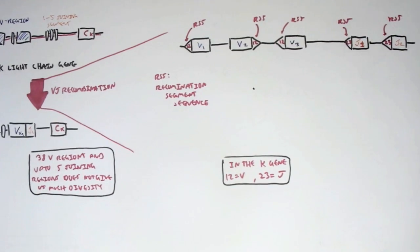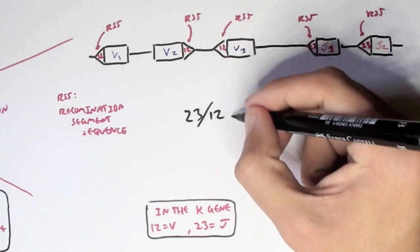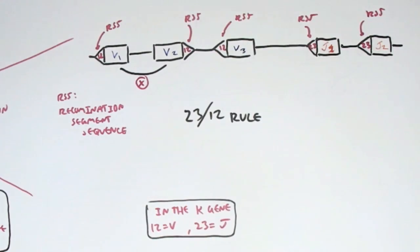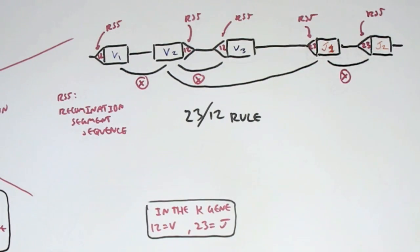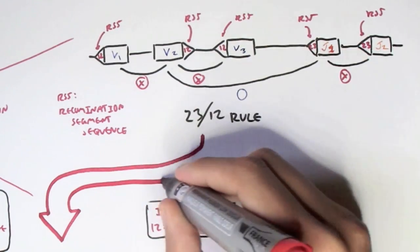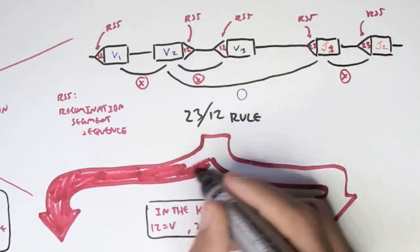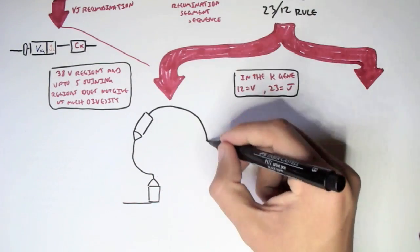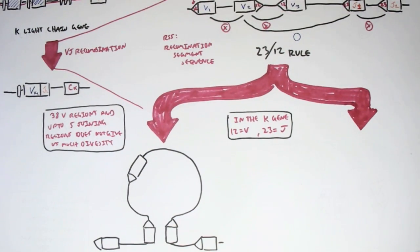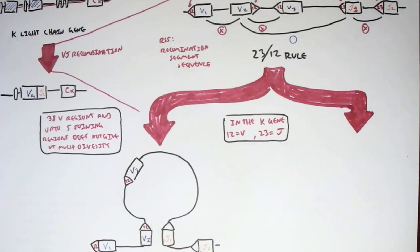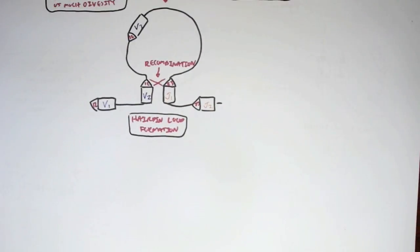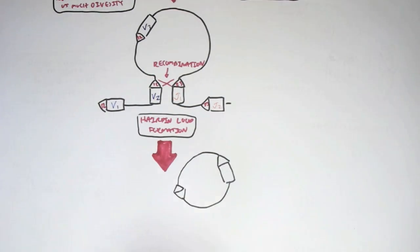Within the kappa light chain gene, variable segments usually have the 12 base pair spacer between a heptamer and nanomer sequence, while joining segments usually have the 23 base pair spacer between the heptamer and nanomer sequences. These RSS motifs follow a special rule called the 23-12 rule, where only a 12 base pair spacer and a 23 base pair spacer can bind together.